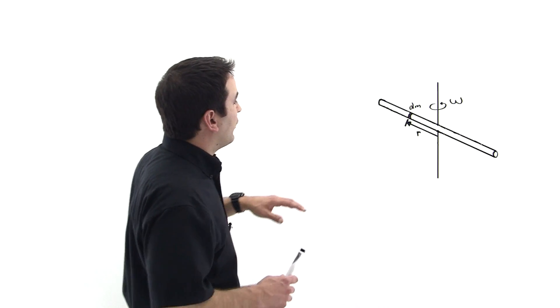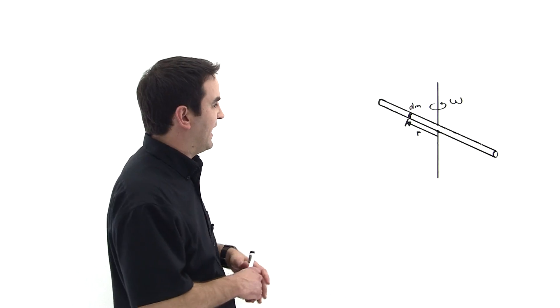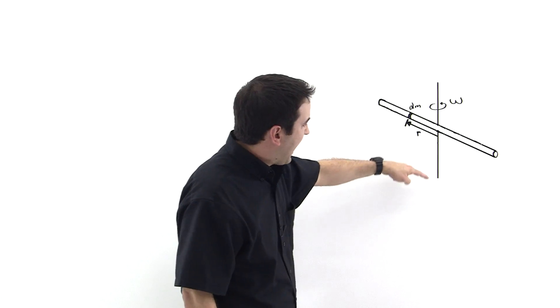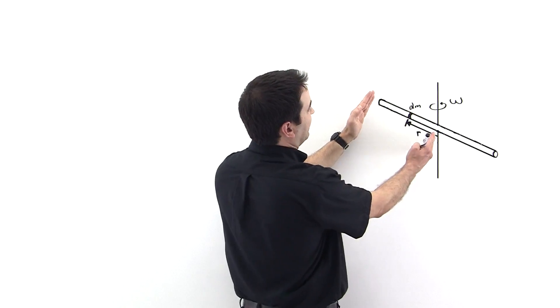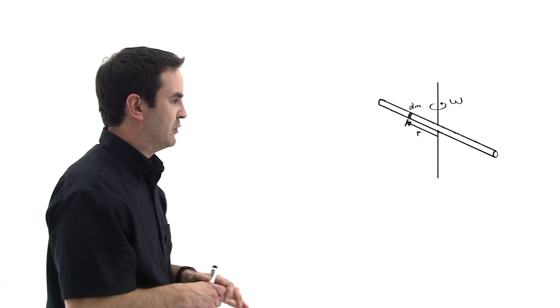Okay, so we have this rod. The rod has a total mass capital M, and a total length capital L. This axis runs right through the middle of it so that this half is L over 2 and this half is capital L over 2. So it's capital L over 2 on both sides.